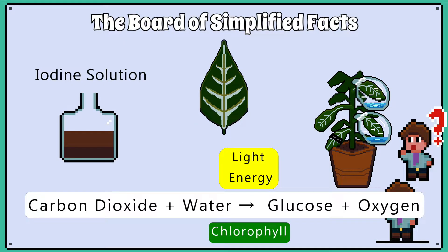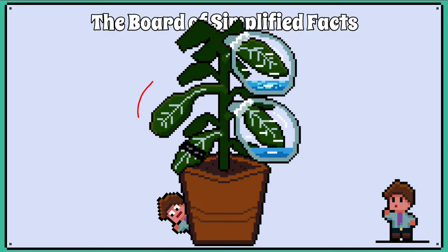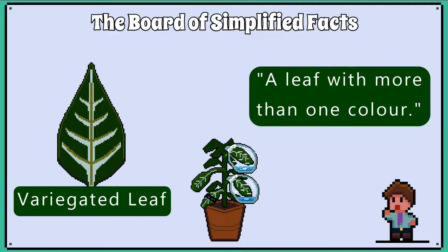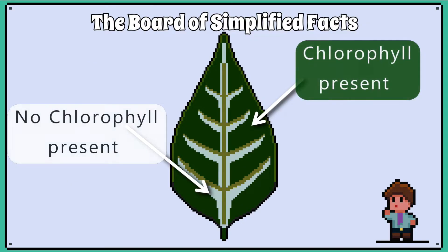We can now investigate what happens if a leaf is exposed to different conditions and how that might affect photosynthesis and therefore starch production. Here is a plant that has had many of its leaves exposed to different conditions. It's important to note that this plant has variegated leaves, meaning the leaves have more than one colour — in this case, green and white. It is important that you realise that the white parts of the leaf on this plant do not contain chlorophyll. This will be really important later on.